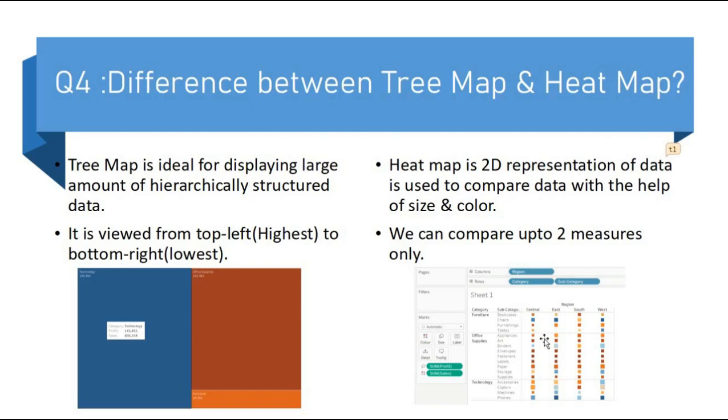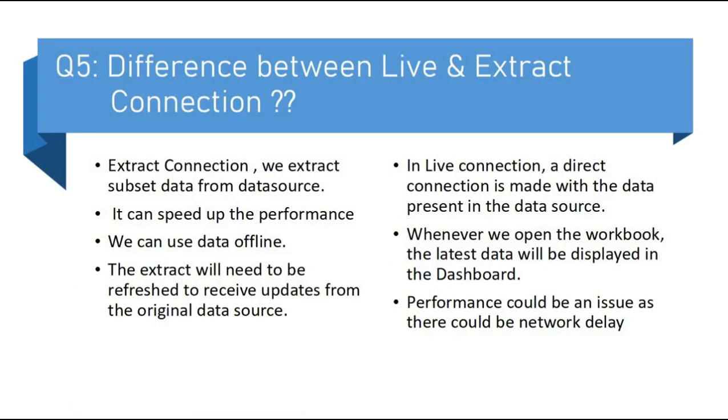Heat map is used to compare the data with the help of size and color. Heat map uses different types of color and size to represent the data. We can compare up to two measures with the help of heat map.